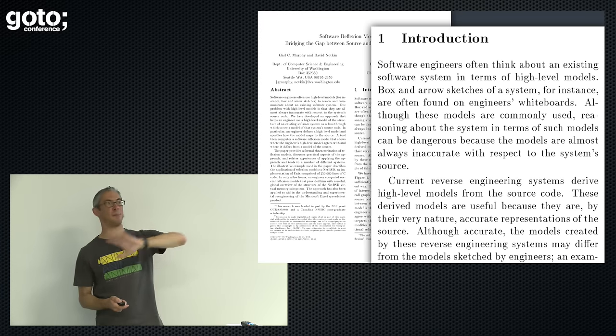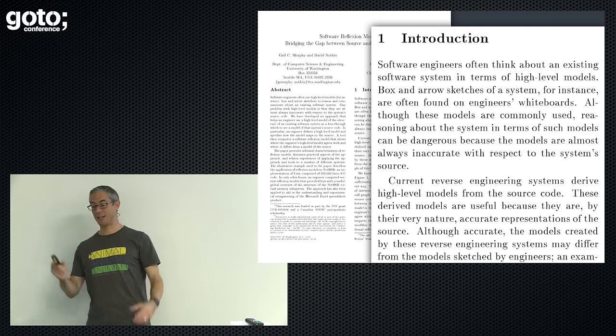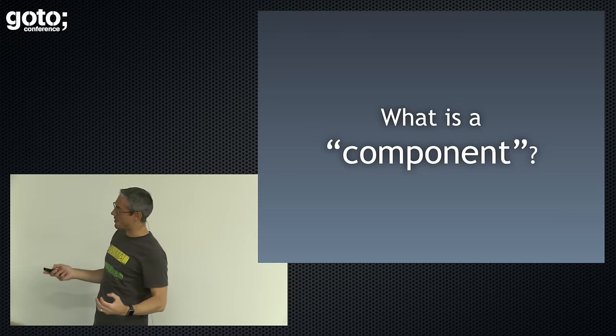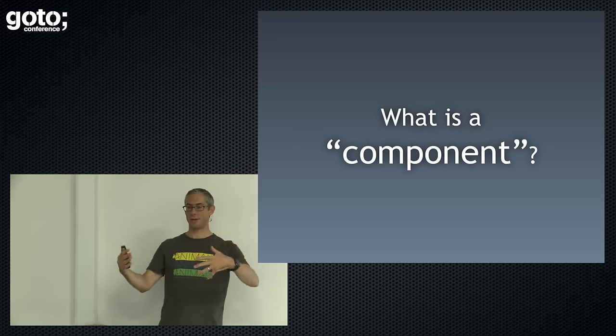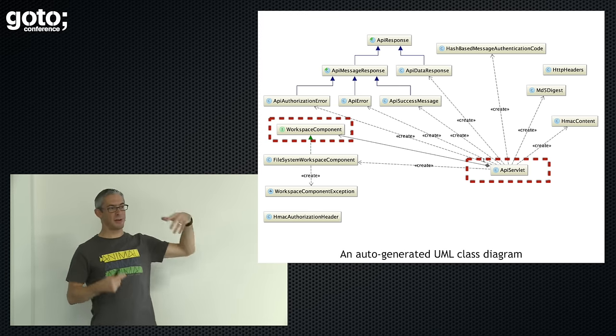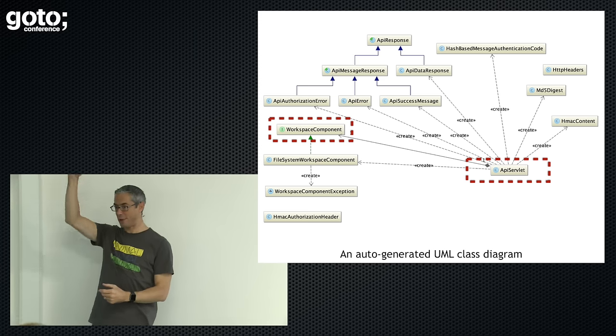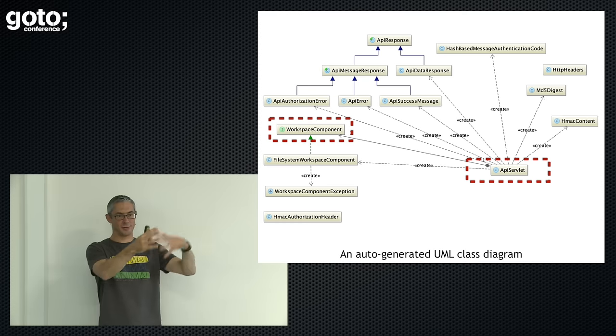The reason is that these diagramming tools see code, not components. They're unable to zoom up to show you bigger abstractions — it's essentially the model-code gap thing again. We can trace this problem back to a paper from the 1990s: if you ask an engineer to draw a picture of their software system, you get a nice high-level view. If you reverse-engineer a diagram from the code, you get something totally different. The reverse-engineered diagram is super accurate but it's not how the engineer thinks about the world. It all comes back to: what is a component?